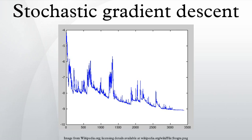In stochastic gradient descent, the true gradient is approximated by a gradient at a single example. As the algorithm sweeps through the training set, it performs the above update for each training example. Several passes can be made over the training set until the algorithm converges; if this is done, the data can be shuffled for each pass to prevent cycles.